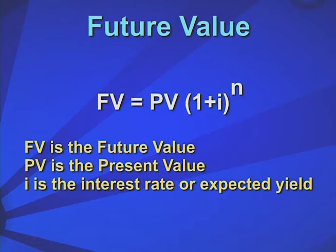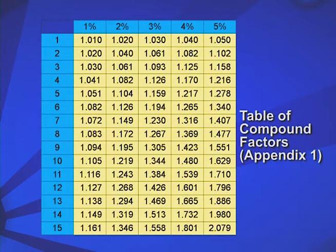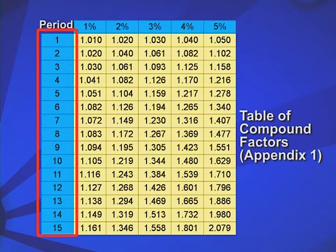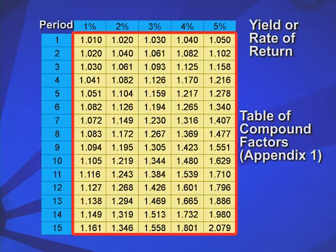The formula uses the interest rate and the number of years of the project life. The entrepreneur can compute the future value by using a financial calculator or a computer. However, for purposes of this lecture, we will provide a table of compound factors. The column labeled 'period' represents the number of years, or months if the expected yield is on a monthly basis. The expected yields or rates of return are shown in the horizontal plane. The compound factors are presented at the intersections of the stipulated period of time and the expected investment yield or rate of return.